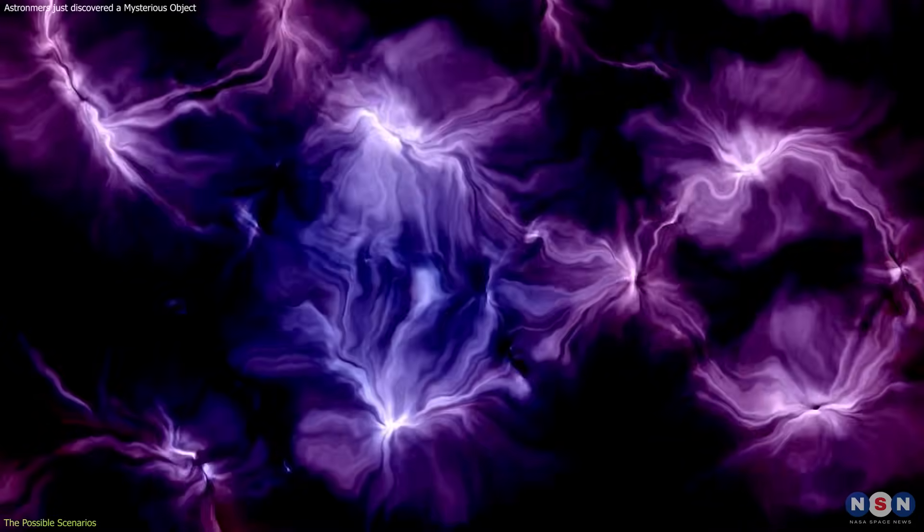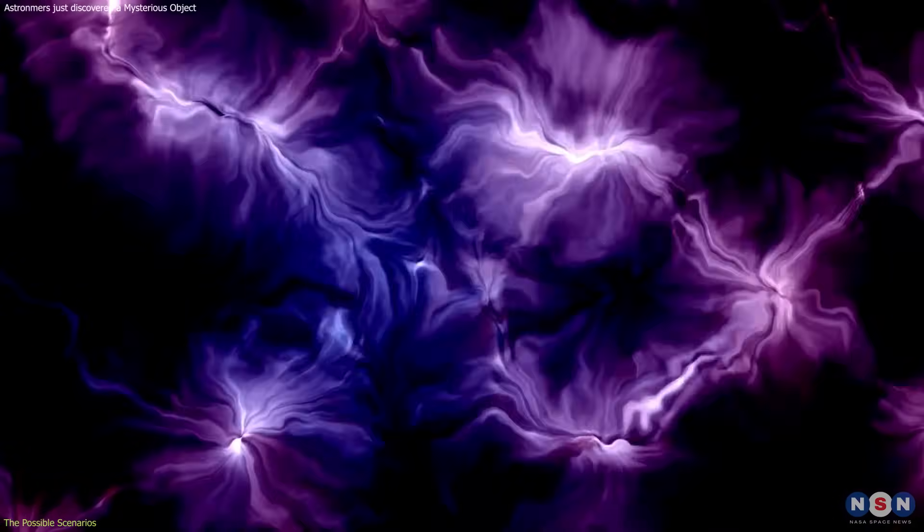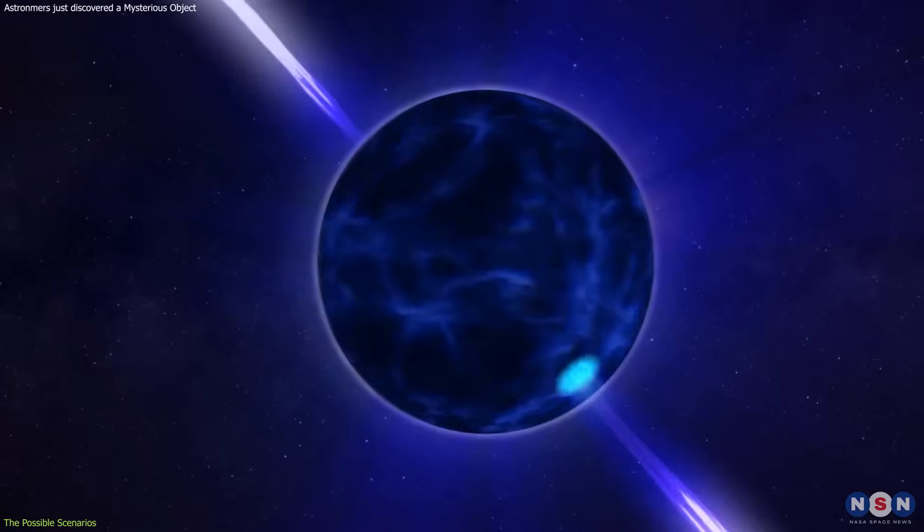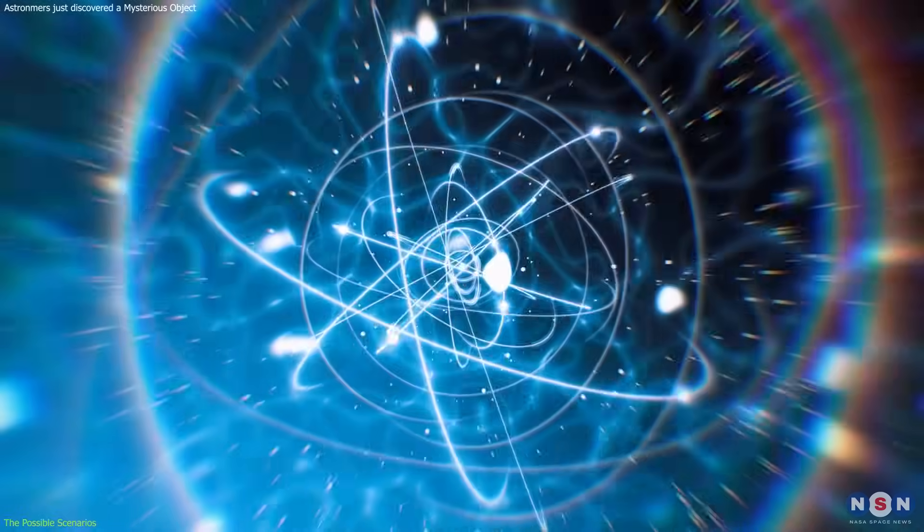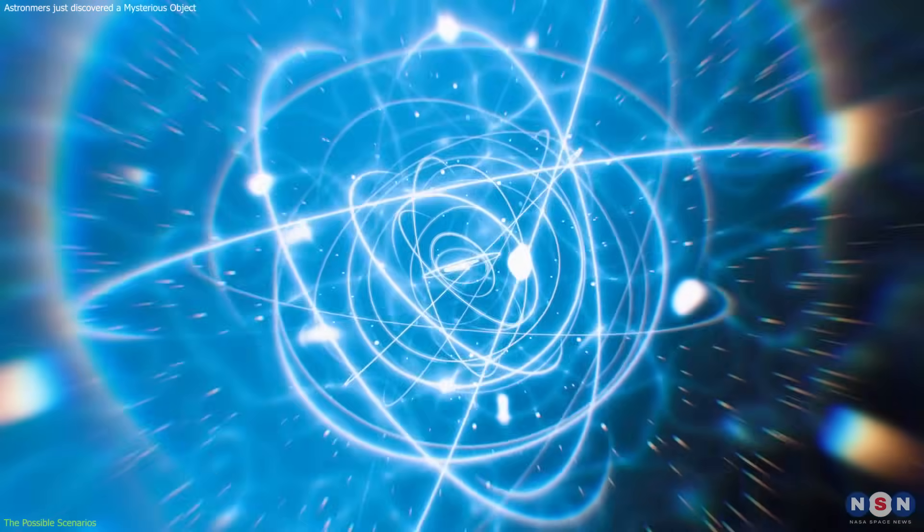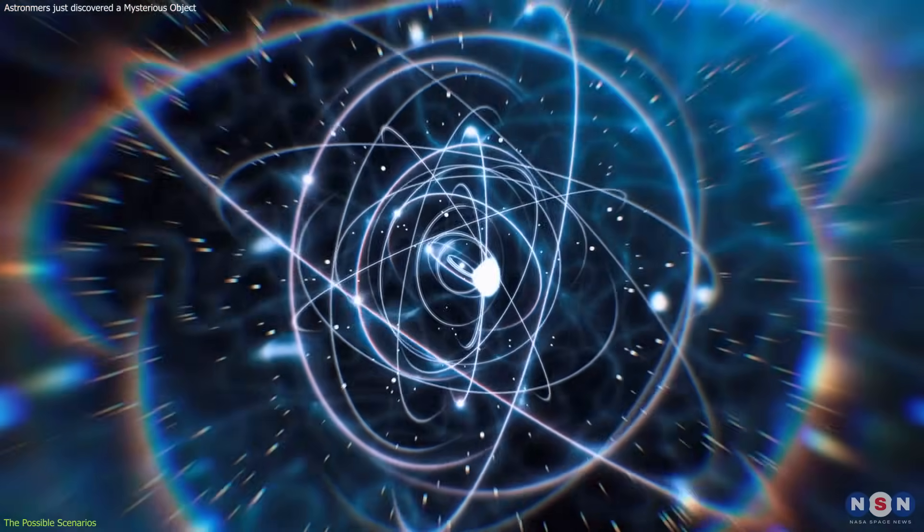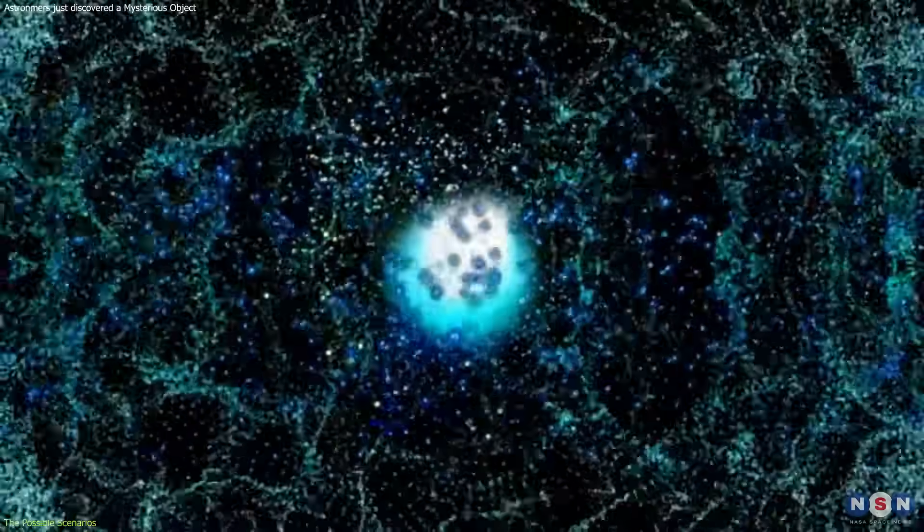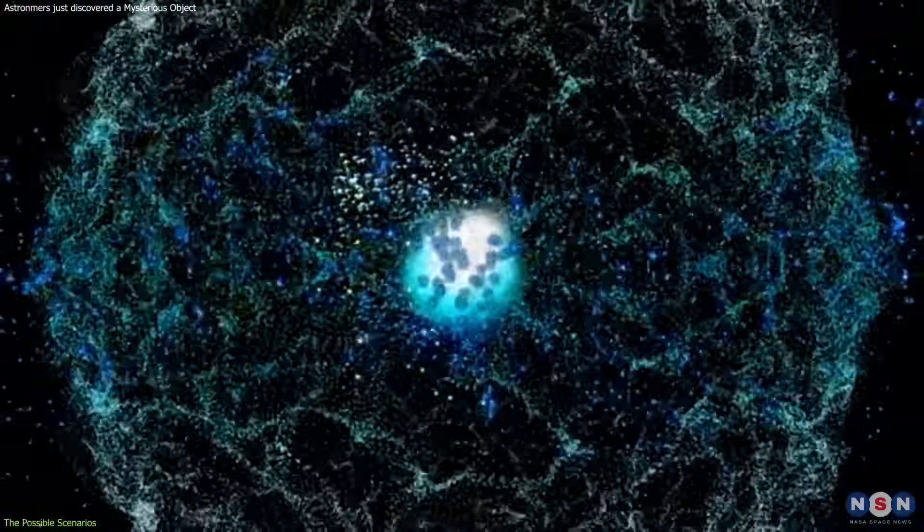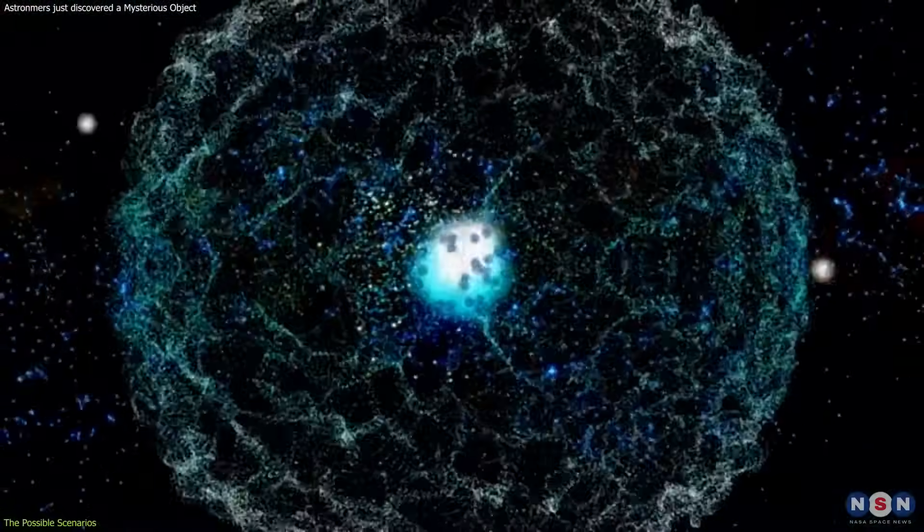A third challenge is the possible existence of exotic states of matter. A neutron star is not just made of neutrons. It can also contain other particles, such as protons, electrons, muons, pions, kaons, hyperons, quarks, and gluons.